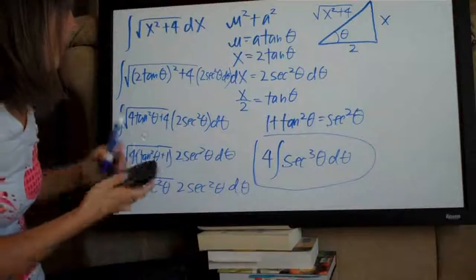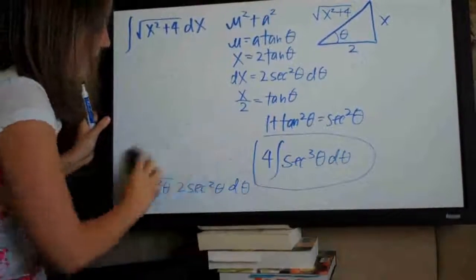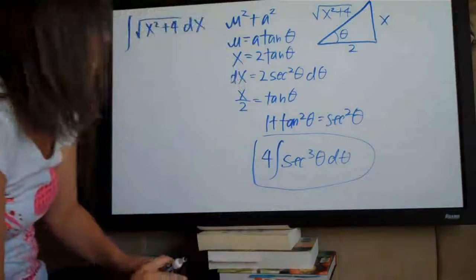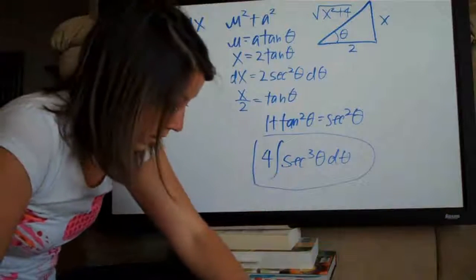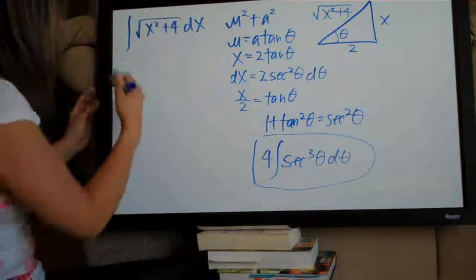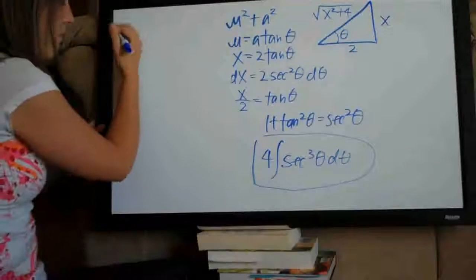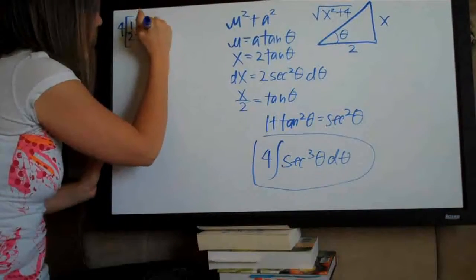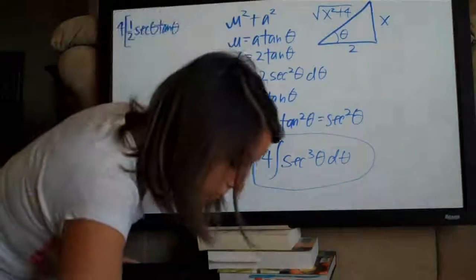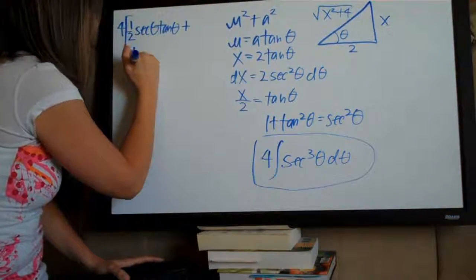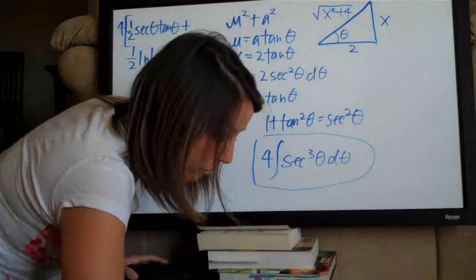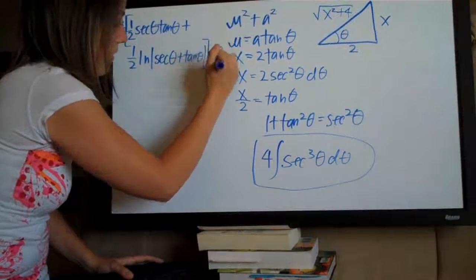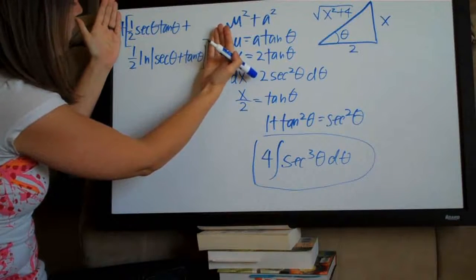Now that we have it simplified, we take the integral using a formula — hopefully provided on a test, because I'd hope you wouldn't have to memorize it. The formula for the integral of secant cubed of any variable, in our case theta, gives us: 4 times one half times secant theta times tangent theta plus one half times the natural log of the absolute value of secant theta plus tangent theta, plus C. That part is our formula for the integral of secant cubed.